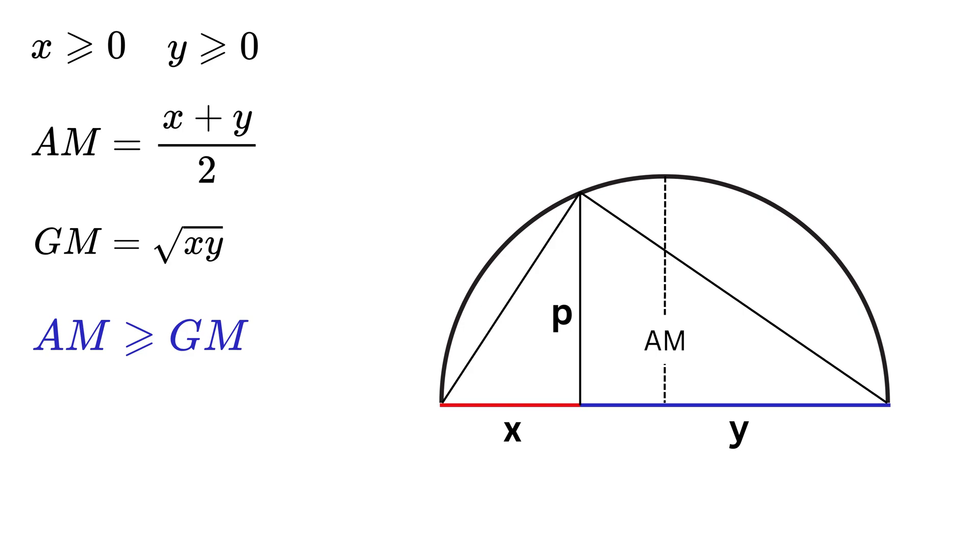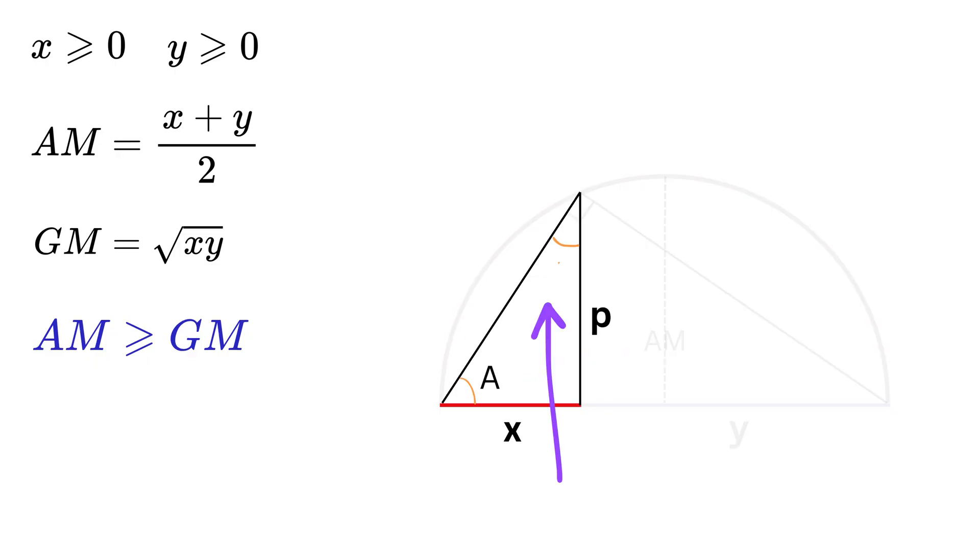But hey, because of Thales' theorem, this will be a right-angled triangle. Now, if this angle is a, then this angle will be 90 minus a, because this is a right triangle. But this is also a right triangle. So this angle will be a itself. And since this is also a right triangle, this angle will be 90 minus a.